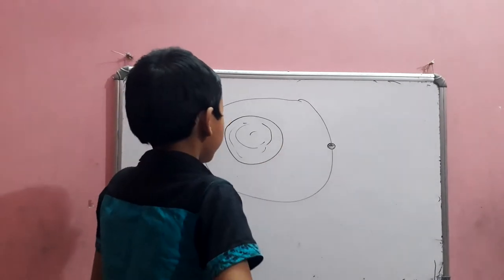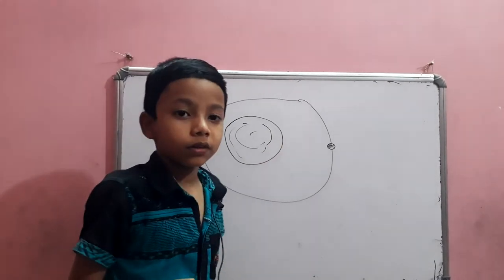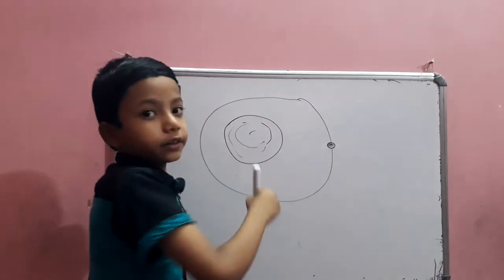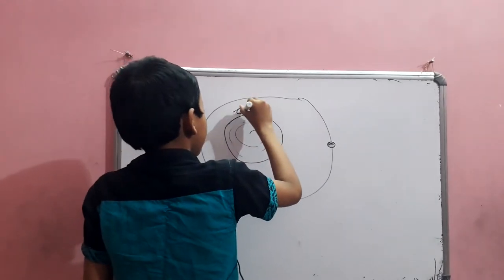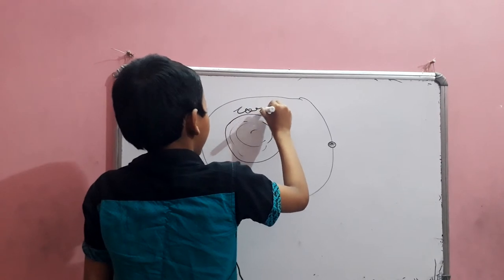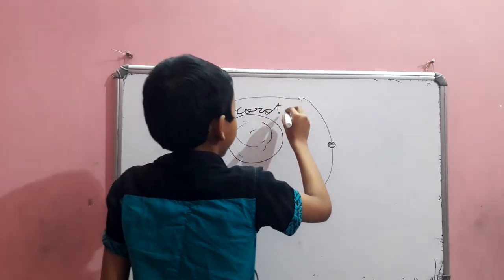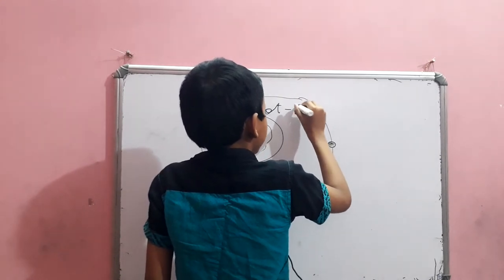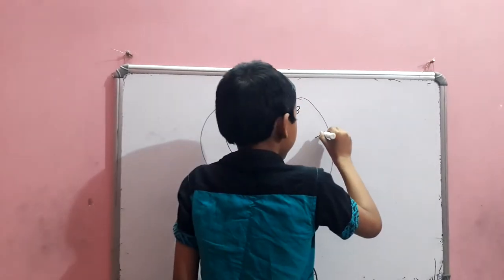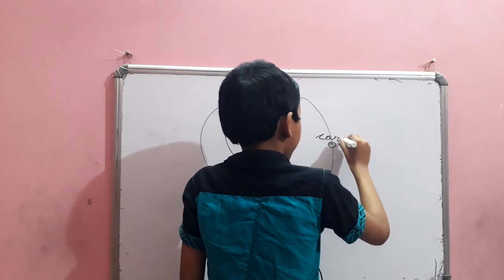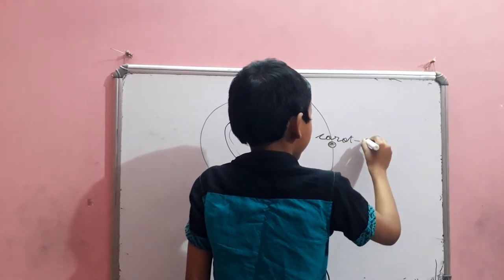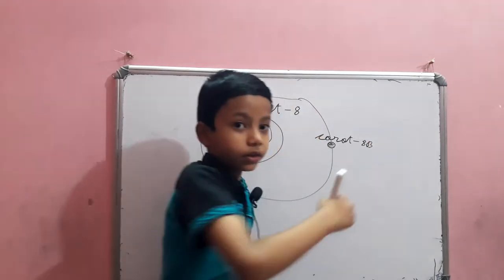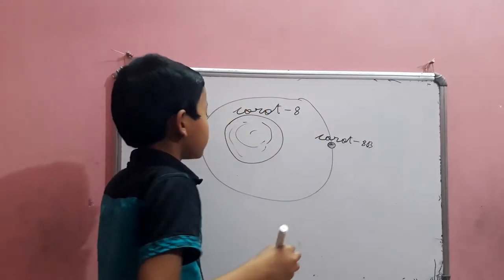Corot-8 is a star which is far away from the Sun. The spelling of Corot-8 is C-O-R-O-T, a line, and an eight. And this name Corot-8 B has a B here. That's the difference.